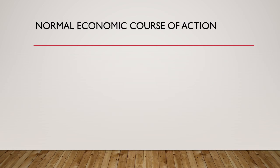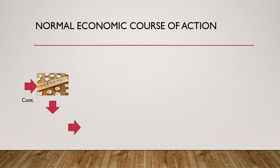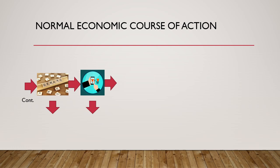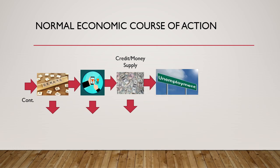Now because of the price increase, in a normal economic course of action, demand correspondingly goes down. As demand goes down, so does the supply of goods in the economy. When supply is going down, the credit requirement or money supply in the economy also correspondingly goes down. In other words, demand goes down, supply goes down, production is down, and money required to produce goods is down — meaning unemployment in the economy rises.